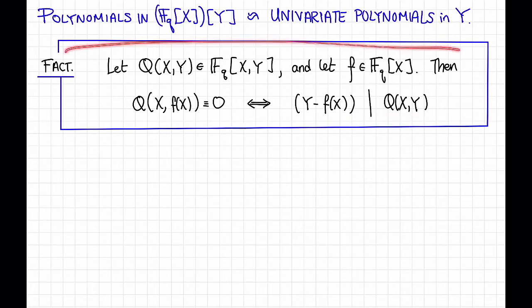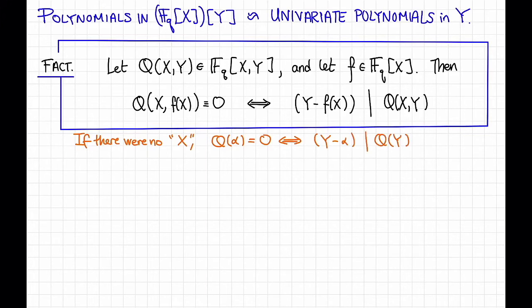This should look kind of familiar. It basically says that if F(X) is a root of Q(X,Y), in the sense that when I plug in F(X) for Y I get 0, then Y minus that root divides the polynomial. We've already seen this in the case for univariate polynomials. For example, if there were no X and we just had a univariate polynomial in Y, then if Q(α) = 0, that means precisely that Y - α divides Q(Y). This is saying that exactly the same thing is true if we replace α with some polynomial in X.